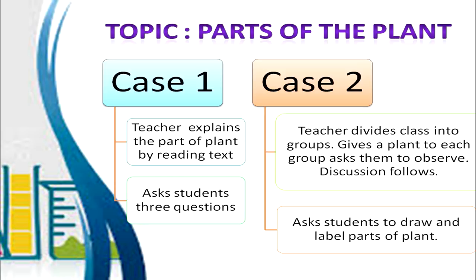Here, the teacher teaches the same topic — parts of the plant — by dividing the class into groups. She gives a plant to each group and asks them to observe, infer, and then discuss. The teacher then asks the students to draw and label the parts of the plant, acting as a facilitator. The students are at the center of the learning process. Case 2 is an example of a constructivist classroom, whereas case 1 was an example of a traditional classroom.